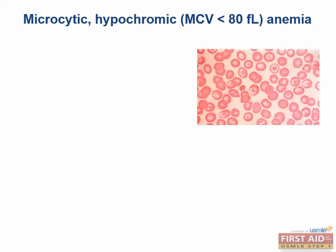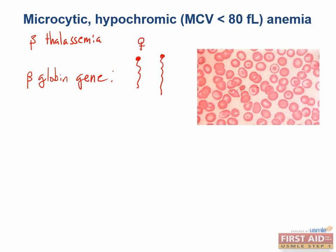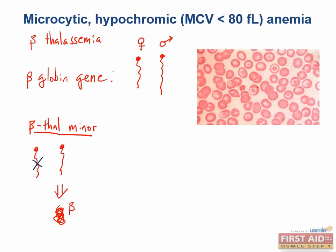Beta-thalassemia involves a mutation in the beta-globin gene. While alpha-thalassemias are more common in Asia and Africa — both starting with A — beta-thalassemia is more common in Mediterranean populations. The most common mutations are point mutations in the splicing sites and promoter sequences of the beta-globin gene. There are only two copies of the gene — one from mom, one from dad — and severity is proportional to the number of mutations. One mutation, or heterozygous, is beta-thalassemia minor, and patients are relatively asymptomatic.